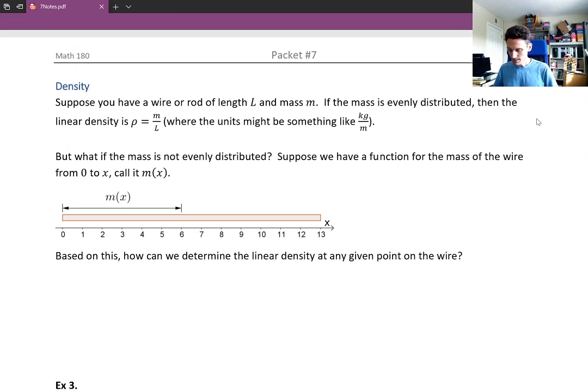So the last example here is density. And the setup is suppose you have some kind of wire or rod where the length is L and the mass is little m. If the mass is evenly distributed then the linear density we can calculate by doing the total mass divided by the total length. Now the symbol there that's used is called rho. Sometimes rho is used for density. Another symbol that's sometimes used for density is a delta. So you might see rho or delta used in different books. But here we're using rho for density. And units of density here might look like kilograms per meter for example where mass is in kilograms and length of the rod might be in meters.